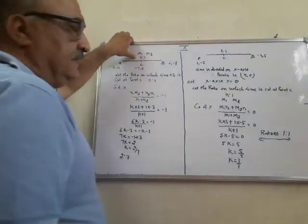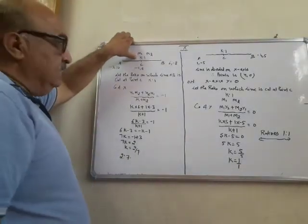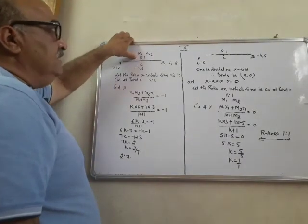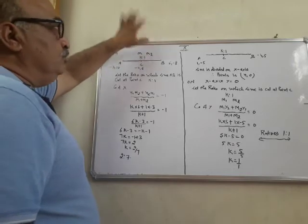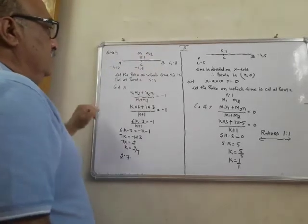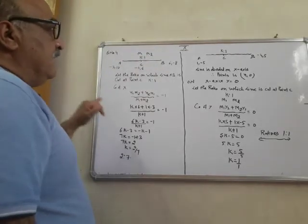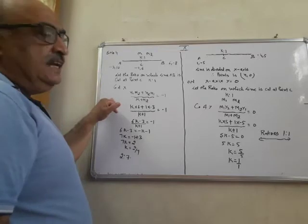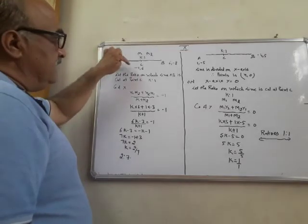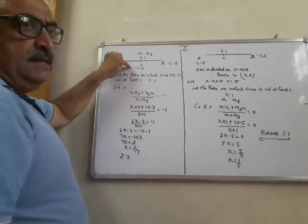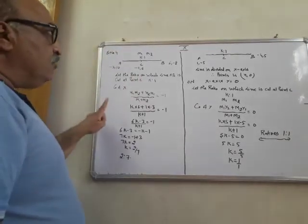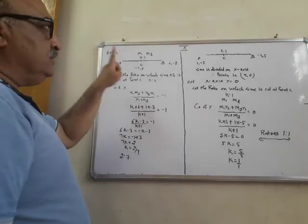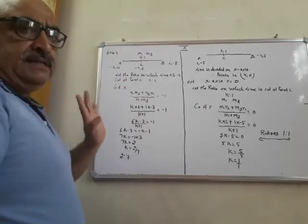K ratio 1 हम माल लेते हैं. K का मतलब M1, 1 का मतलब M2. So, we have here x-coordinate equal to minus 1, y-coordinate equal to 6.